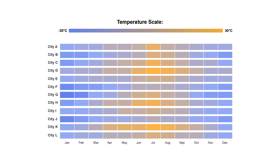Heatmaps can also be used to show the changes in data over time if one of the rows or columns is set to a time scale. An example of this would be to use a heatmap to compare the temperature changes across the year in multiple cities to see the hottest or coldest places. The rows could list the cities to compare, the columns contain each month, and the cells would contain the temperature values.